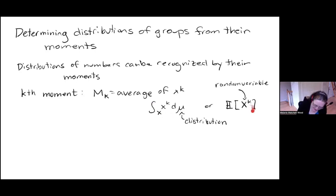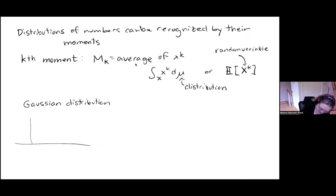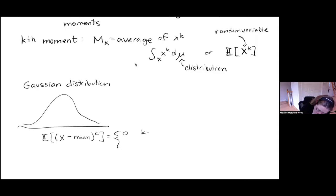If these averages exist, you get some number m sub k. Among the most familiar distributions, the first example is the Gaussian distribution. In probability notation, the moments are easier if we center them — subtract the first moment — and then the moments of the Gaussian distribution are 0 when k is odd, and sigma^k times (k-1) double factorial when k is even. The double factorial means you skip every other number when multiplying. These are the moments of the Gaussian distribution.